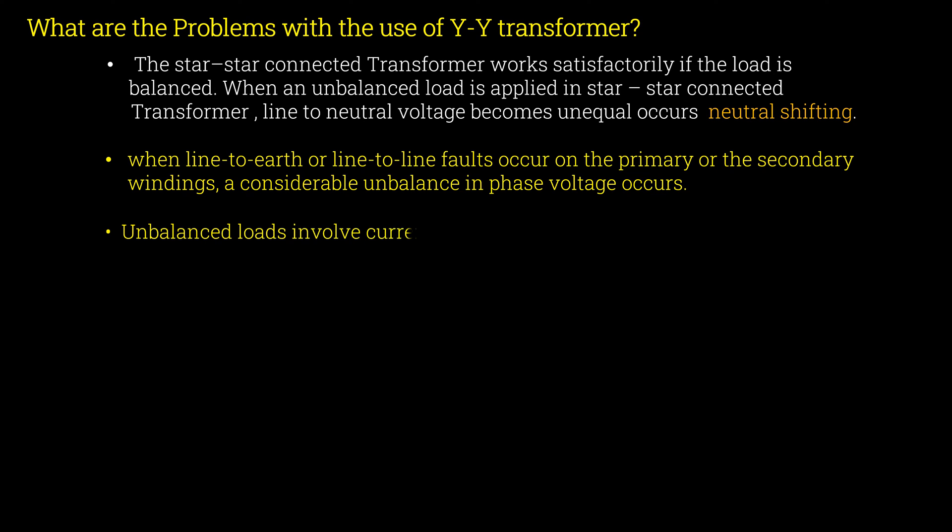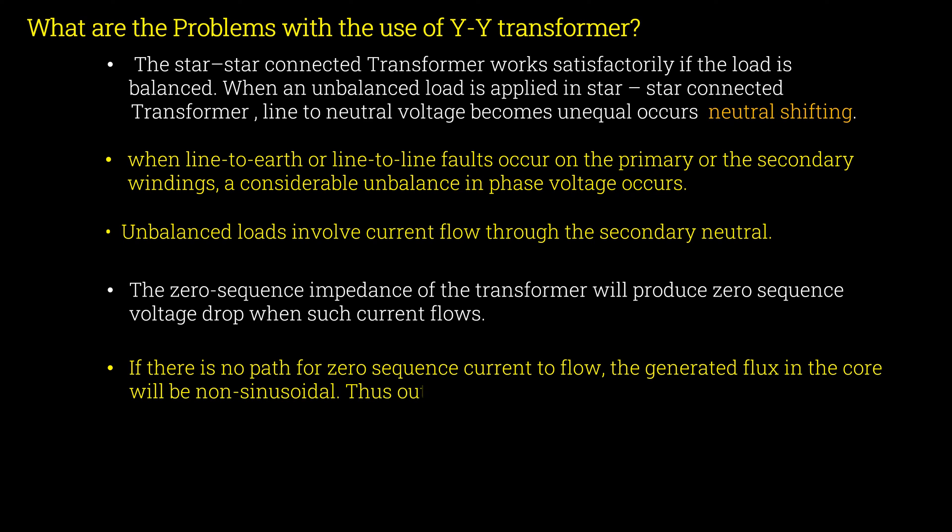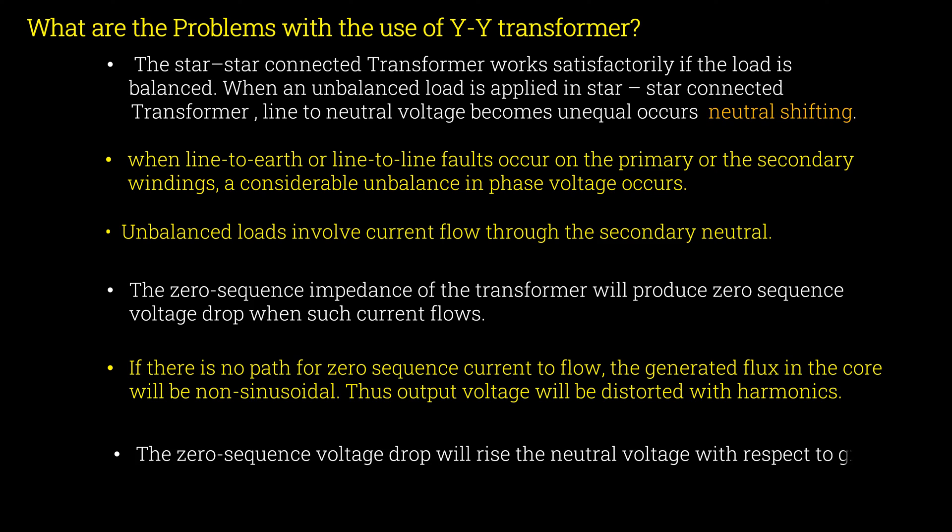Unbalanced loads involve current flow through the secondary neutral. The zero sequence impedance of the transformer will produce zero sequence voltage drop when such current flows. If there is no path for zero sequence current to flow, the generated flux in the core will be non-sinusoidal, then output voltage will be distorted with harmonics. The zero sequence voltage drop will raise the neutral voltage with respect to ground from its normal value of zero.